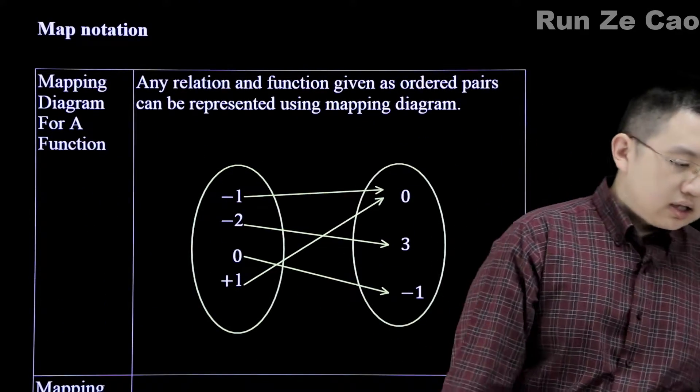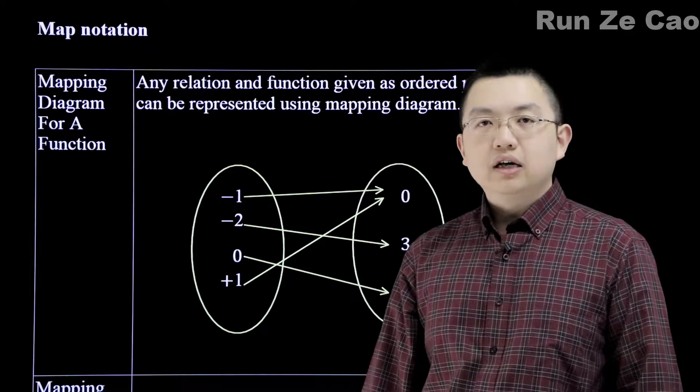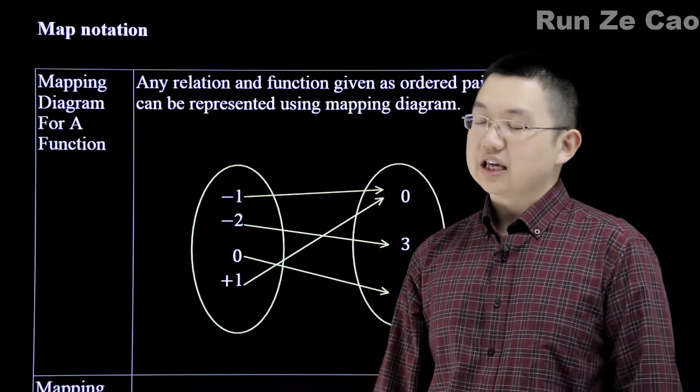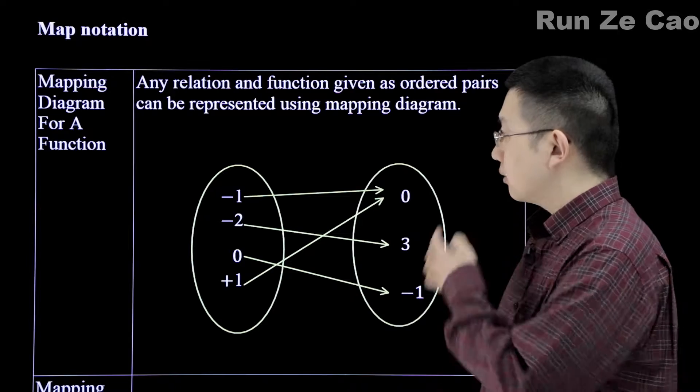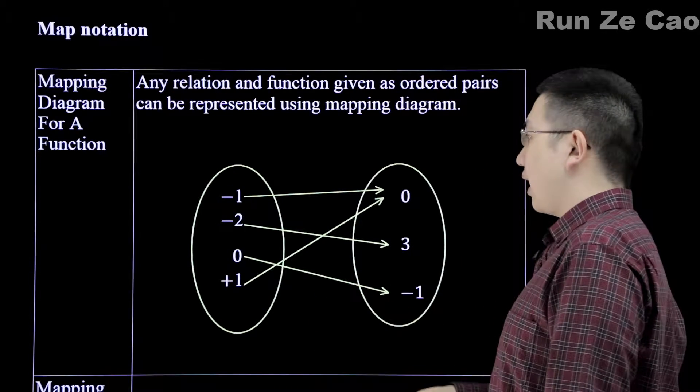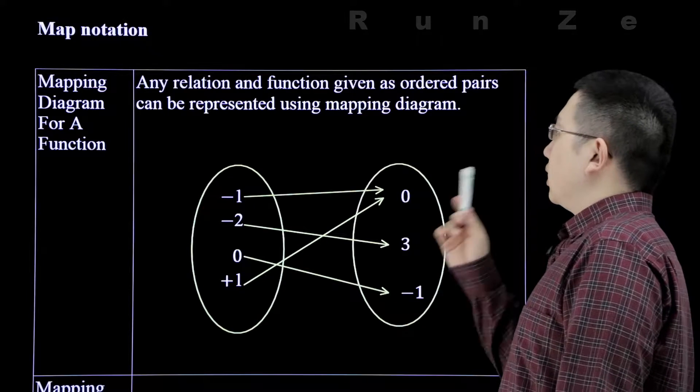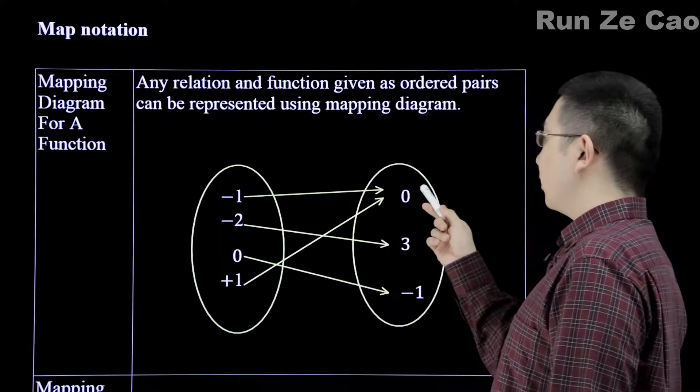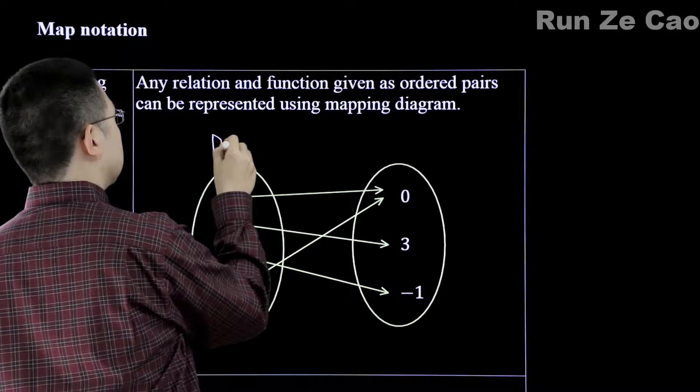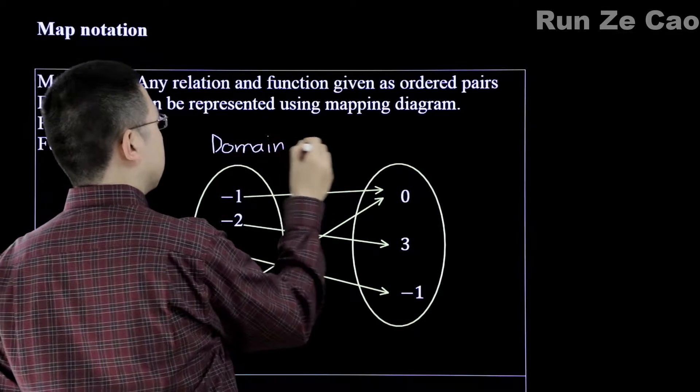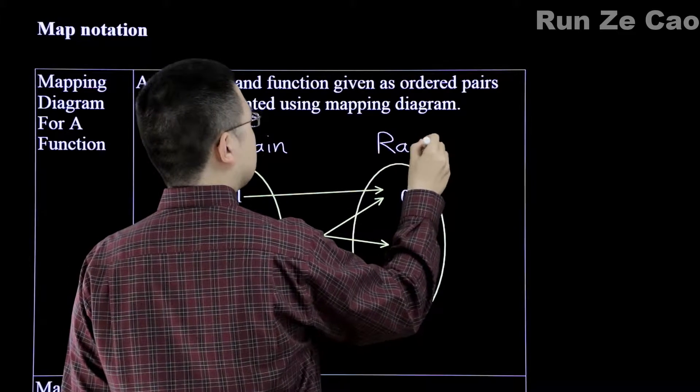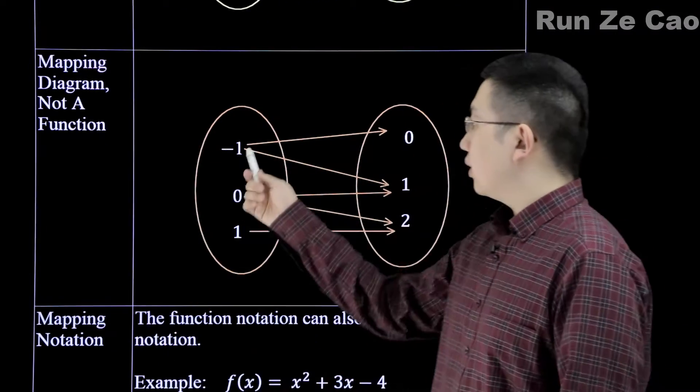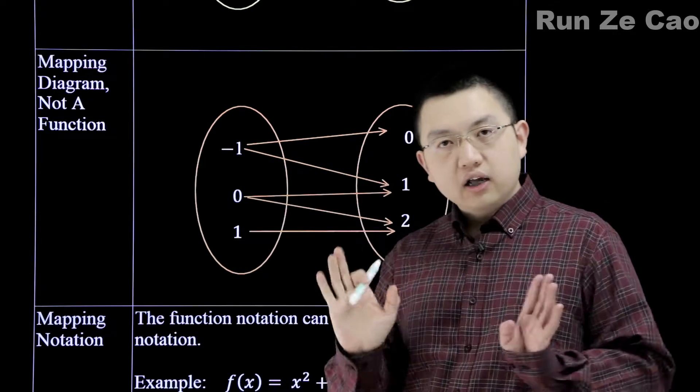So map notation is one that will almost never be used after this section or this chapter simply because it is ridiculously clunky, to put it very politely. Why? Well, this is a mapping diagram that's for a function. See how different values in the domain can have the same value in the range.